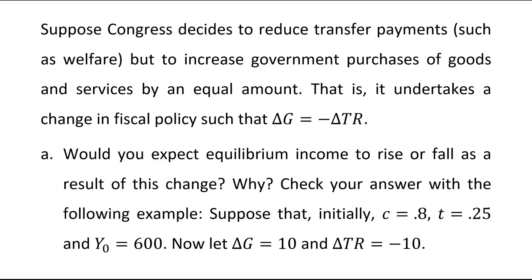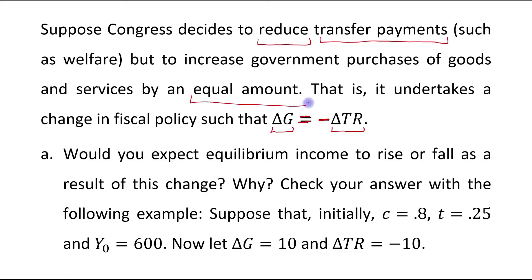Suppose Congress decides to reduce transfer payments such as welfare but to increase government purchases of goods and services by an equal amount. It undertakes a change in fiscal policy such that change in government expenditure equals minus the change in transfer payments — why minus? Because the government reduces the transfer payments. Both changes, reducing transfer payments and increasing government purchases, are of equal amount.